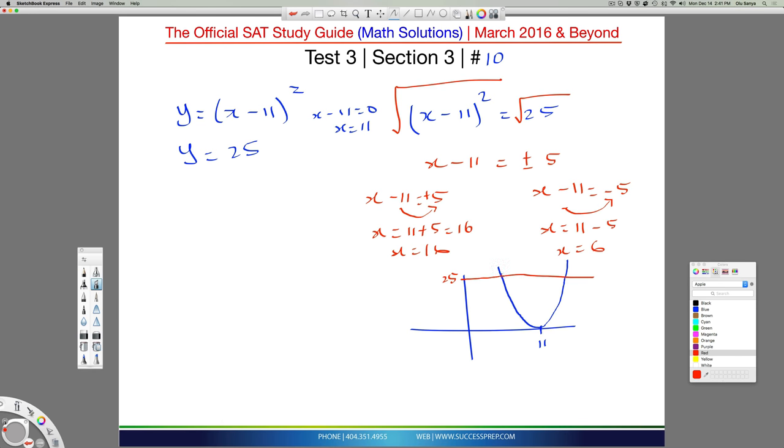It's going to cut there. So essentially the AB the question is referring to is right here, the point of intersection there and the point of intersection there. Now think about it, the AB that it's referring to, this is 6 because we've got 6 in this math and this is 16. So you have 6 to 16. So your AB line is just 10, the difference between 16 and 6. That's what the 10 is referring to.